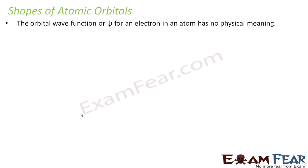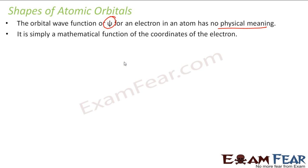Shapes of atomic orbitals. The wave function has no physical meaning. So if you observe from a hi-fi microscope or something, you won't see the orbitals actually. This is something which you can't see — it's just a probability function, just a mathematical function for the coordinates of the electron.